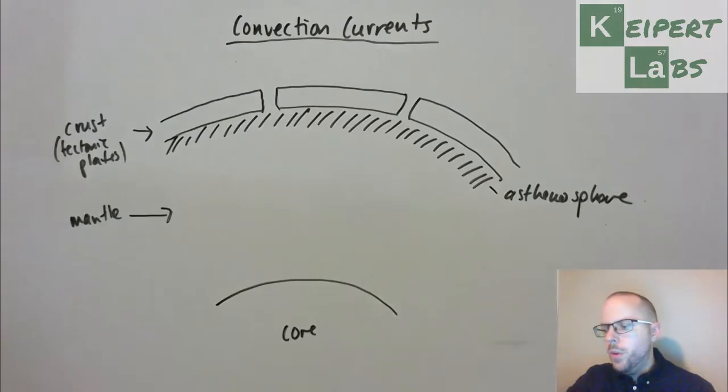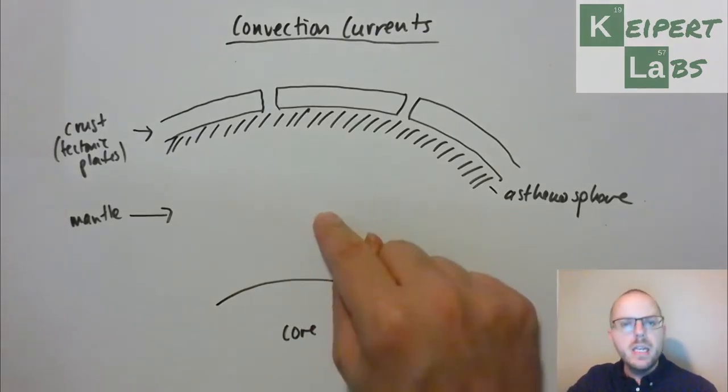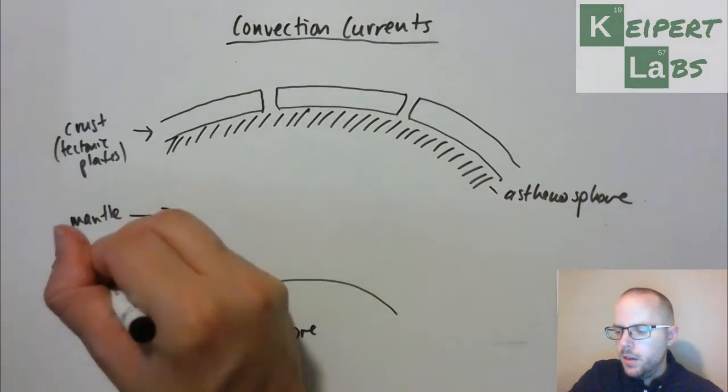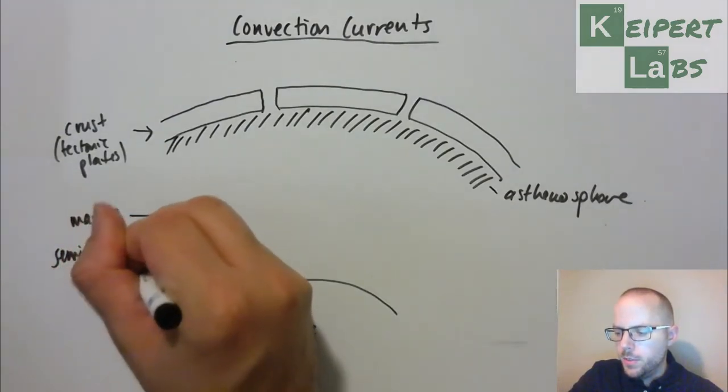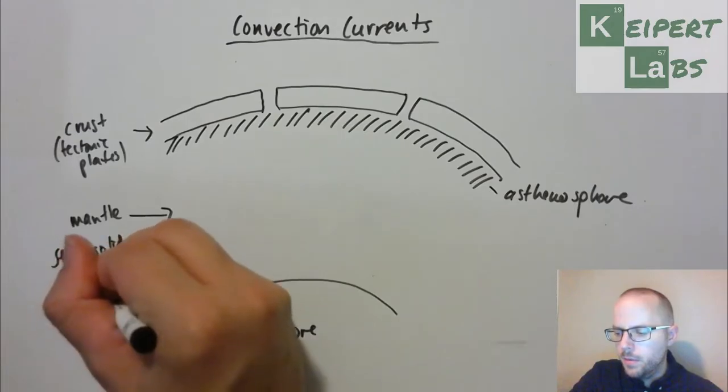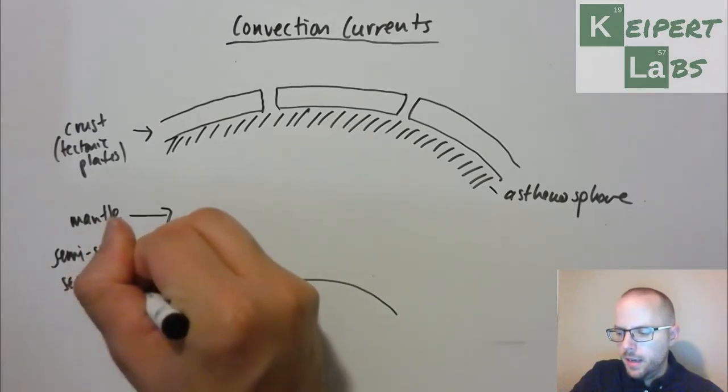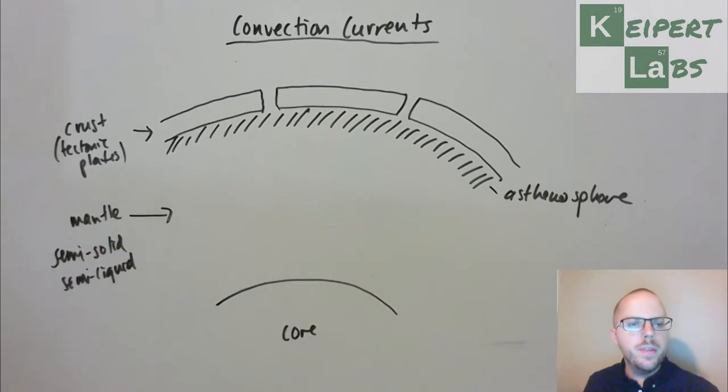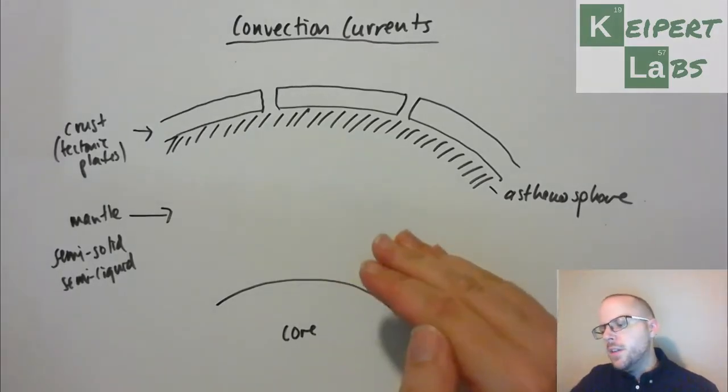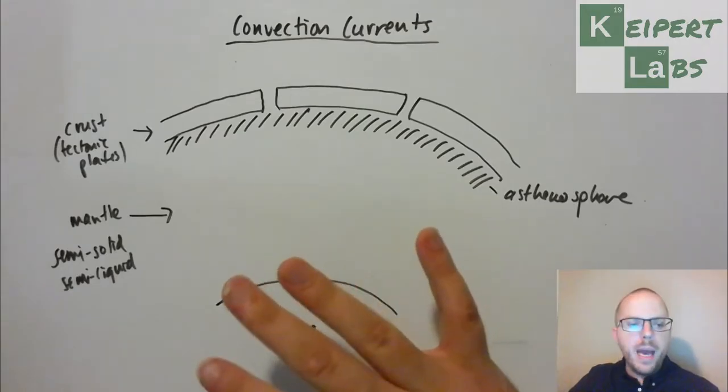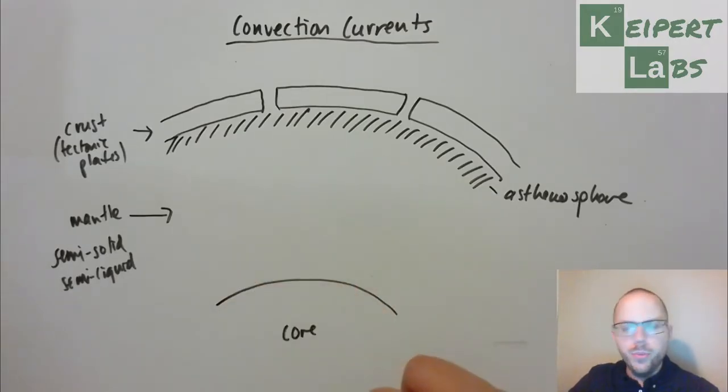So remember that we've talked about this idea that the mantle is semi-solid, which means that it's semi-liquid. It's a bit like that oozing, flowing rock. It's really hot, it's under a lot of pressure, but because it's able to behave a bit like a liquid, it's able to move.